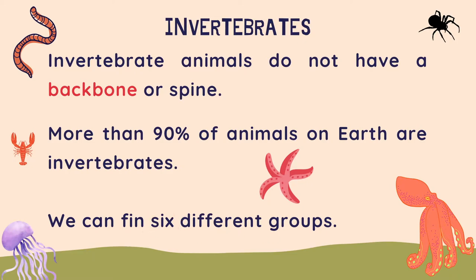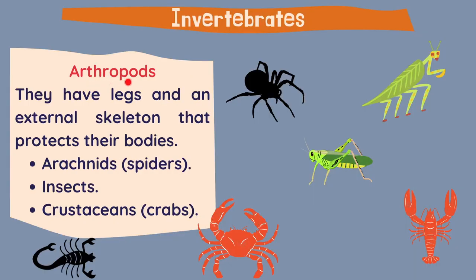Let's have a look at them. Arthropods: they have legs and an external skeleton that protects their bodies. In this group, we have arachnids like spiders, insects, and crustaceans like crabs.